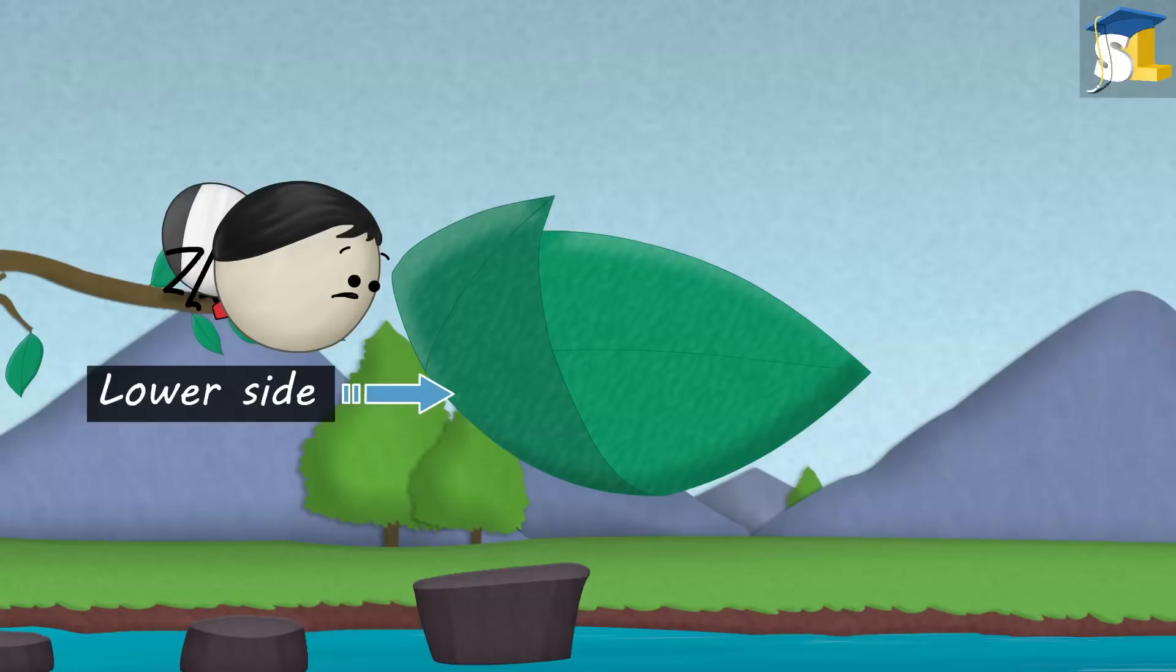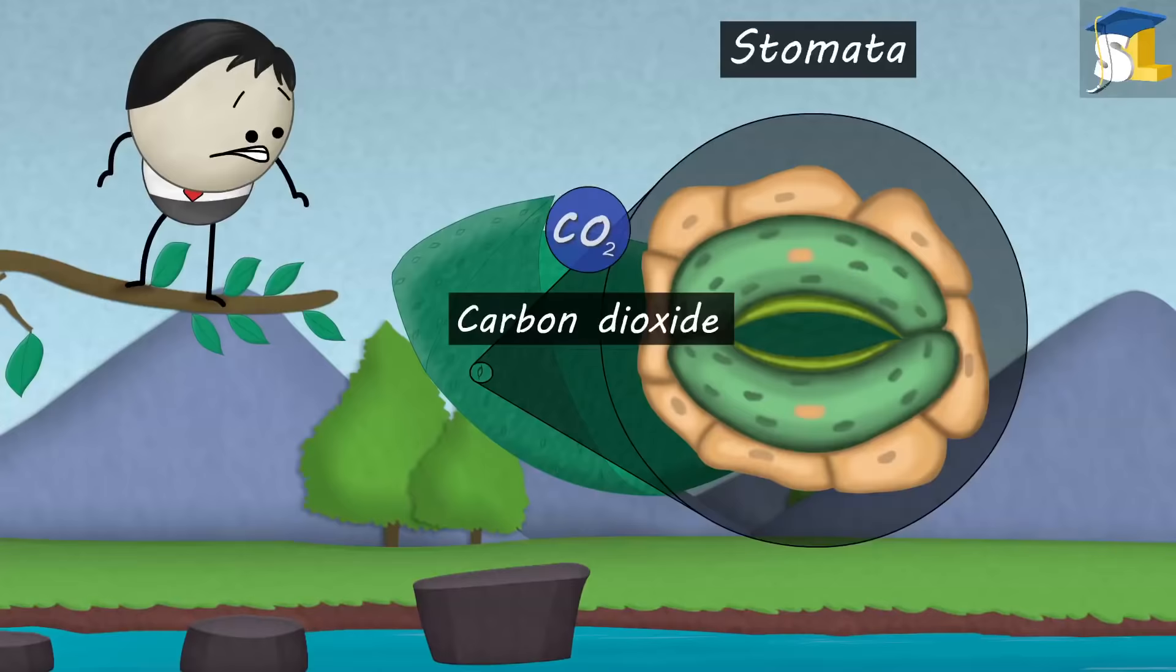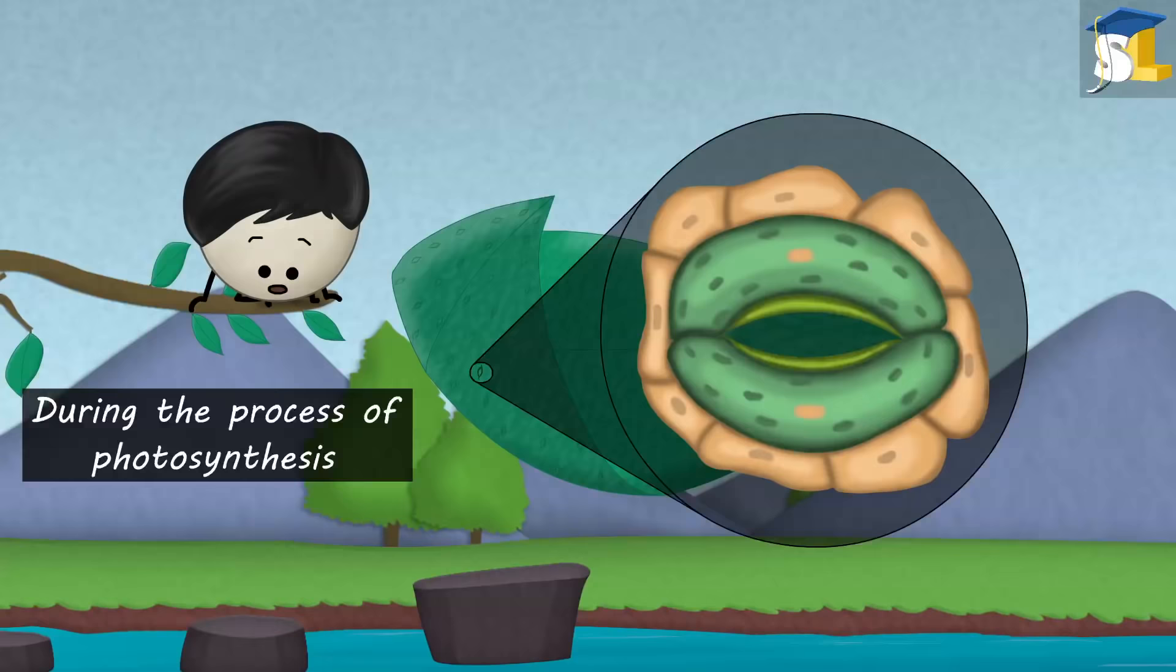On the lower side of the leaves, tiny pores called stomata are present. They help the leaves to take in carbon dioxide from the air during the process of photosynthesis.